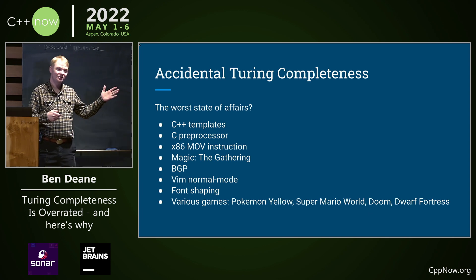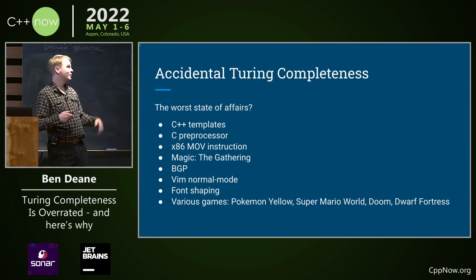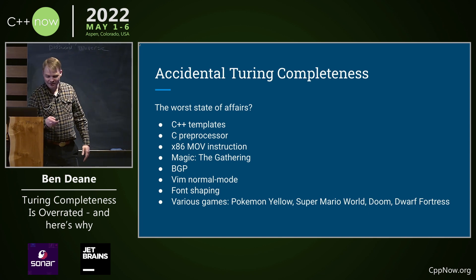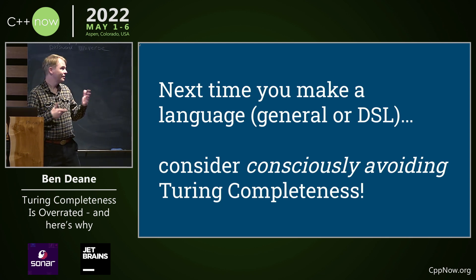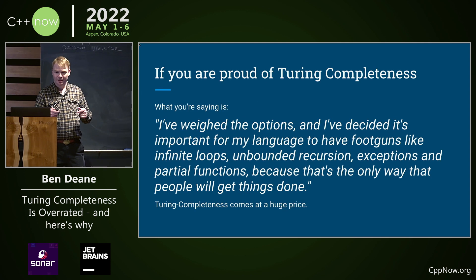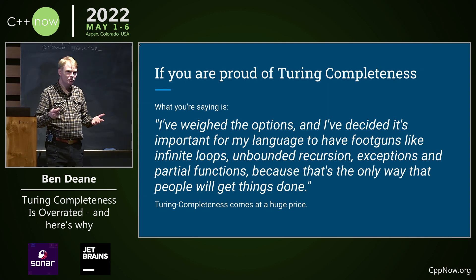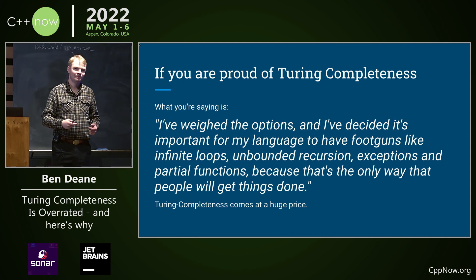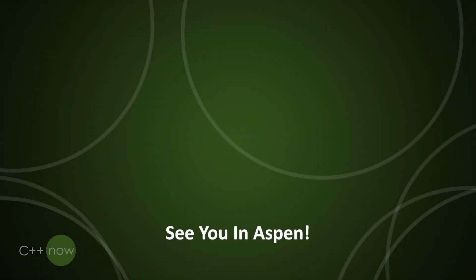The worst state of affairs you can find yourself in is accidental Turing completeness, which applies to many things — you can find lists online, and many things in C++ alone are accidentally Turing complete. So the next time you make a language, a DSL, or a general purpose language, consider consciously avoiding Turing completeness. Because if you are proud of Turing completeness, you're saying: I've weighed the options and I've decided it's important for my language to have foot guns. Because that's how people get things done. Thank you.